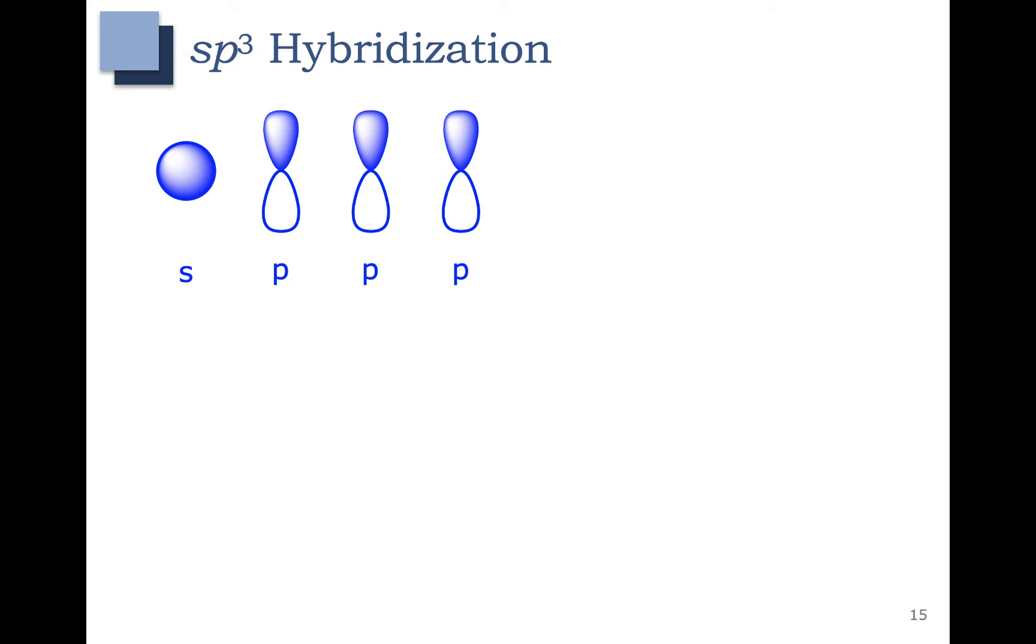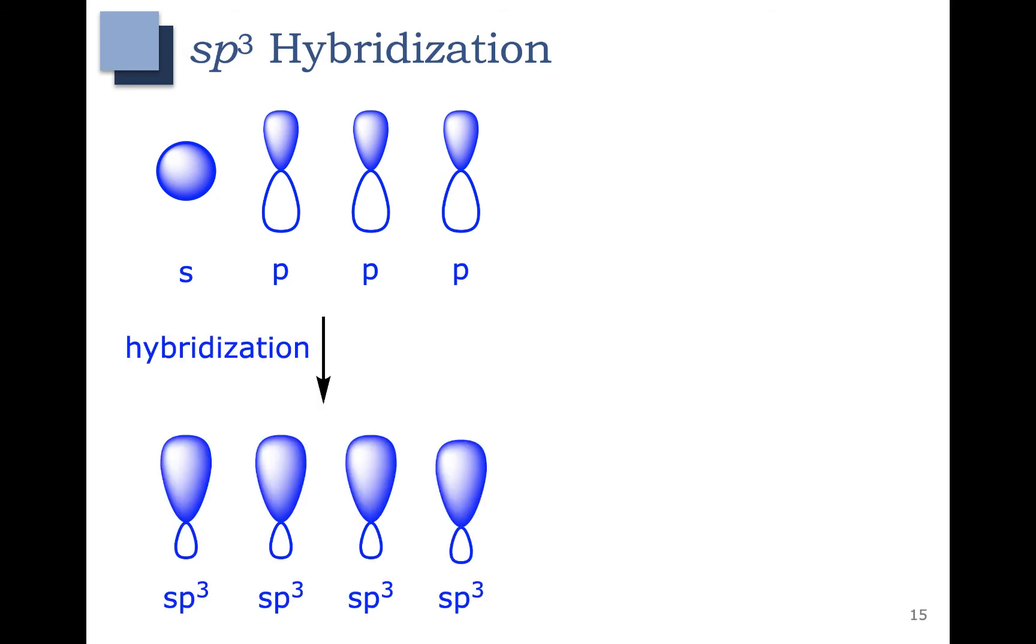Only two of those p orbitals would have one electron. In the hybridization process, all of these orbitals mix and combine. And what they end up doing is spitting out four sp3 hybridized orbitals. Each of these orbitals contains approximately one quarter of the s orbital and approximately three quarters of a p orbital.